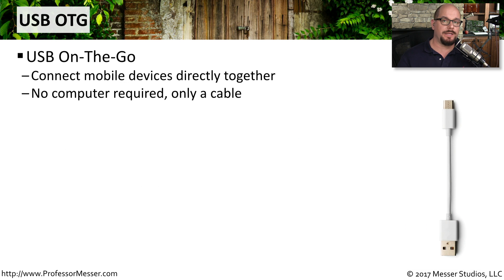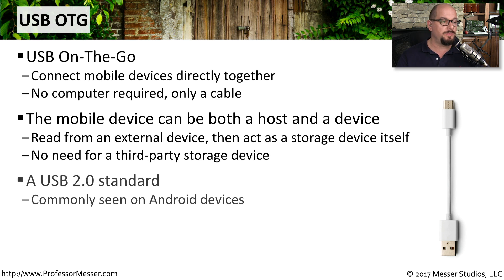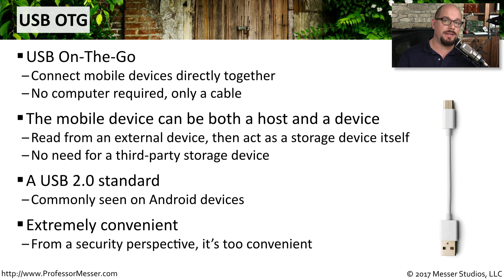Normally we think about connecting mobile devices to a computer via USB, but many mobile devices support a function called USB OTG — USB On The Go — which allows multiple mobile devices to connect directly together without a computer. The device acts as both a host and a storage device, making it easy to transfer data between devices. It's part of the USB 2.0 standard and commonly available on Android devices. From a security perspective this is almost too convenient, so you may want to set policies in your mobile device manager on whether USB OTG is enabled.